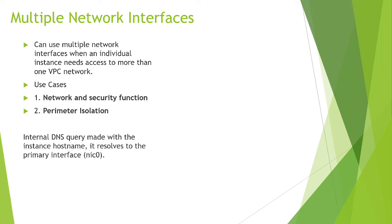It is used when you want to use multiple network interfaces in a single instance that needs access to more than one VPC network. Suppose you have a VM that needs to access two, three, or four VPCs — you create multiple interfaces in different VPC networks. When you create your VM, all the VPC networks must be in the same project, unless you are using a shared VPC.